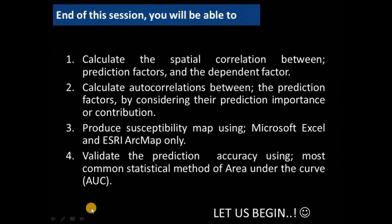In the end of this session, you will be able to learn how to calculate the spatial correlation between prediction factors and the dependent factor — meaning between the conditioning factors and your target. Then calculate the autocorrelation between the prediction factors based on the importance of each factor or contribution. I will produce a susceptibility map using Microsoft Excel and ArcMap, and the last step will be carrying the validation of the prediction accuracy using one of the most common statistical methods: area under the curve.